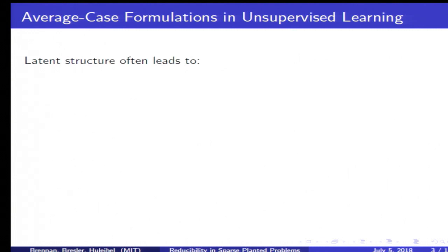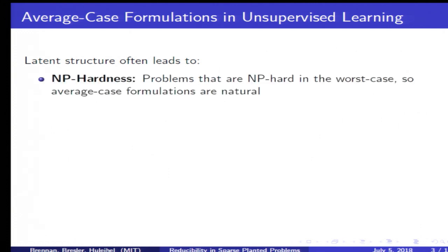While these structural assumptions are popular, they lead to several complications. First, they often lead to problems that are NP-hard in the worst case. In the example I gave, the natural worst case formulation would be a top k-sparse eigenvector computation, which is NP-hard to approximate. As a result, because of these NP-hard resulting worst case formulations, it's natural to take on average case formulations in unsupervised learning.